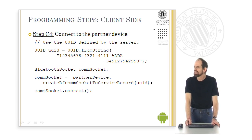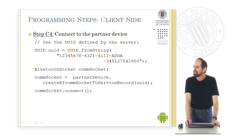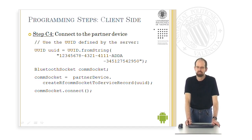Now partnerDevice contains a reference to the device to connect to, and a connect request is sent to it. We call CreateRFCOMSocketToServiceRecord using the UUID of the server defined above, then call connect on this socket to send the connect request to the server. Once the server has executed its accept, the connection between the two devices has been established.